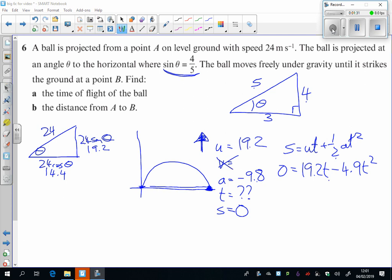So we've got a little quadratic here. We've got two answers here, t equals 0 is one answer, and of course that's where you started. We don't want that one.